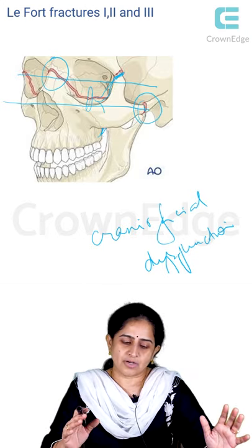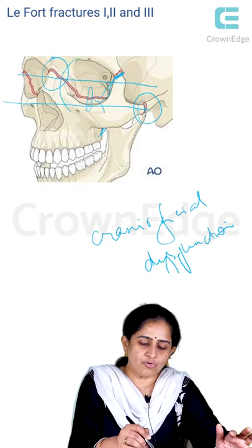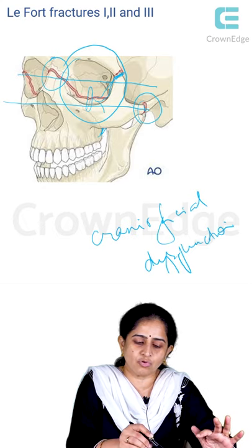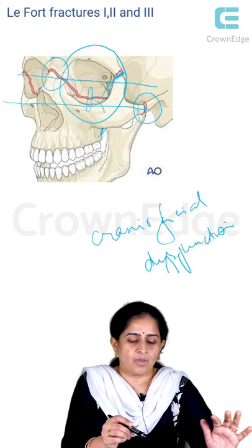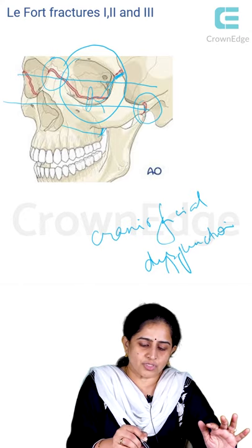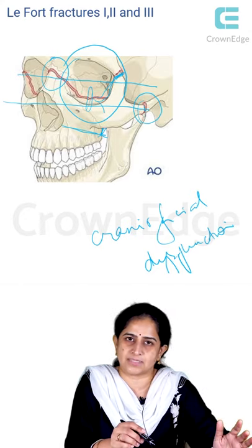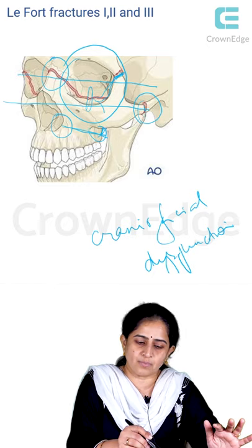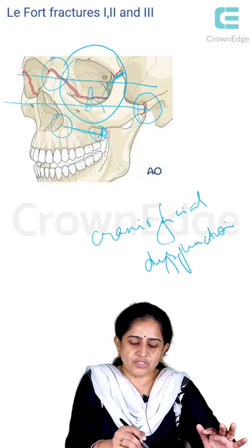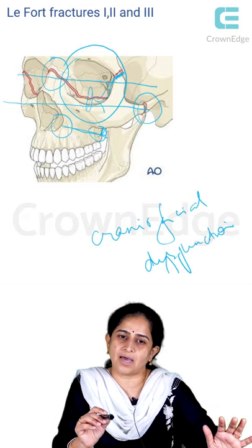Le Fort 2 and Le Fort 3 fractures will give you what are called eye signs, because both fractures actually pass through the orbit, whereas a Le Fort 1 fracture — which is a much lower fracture — does not give you eye signs. In Le Fort 1 you will see swelling or tenderness in the region of the lateral piriform aperture or the zygomatic buttress, but no signs involving the eye.